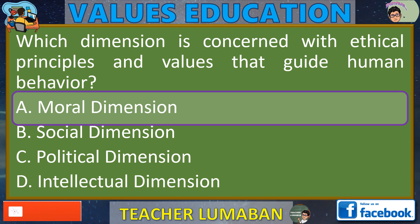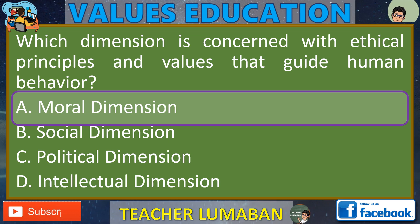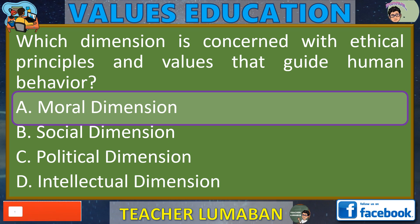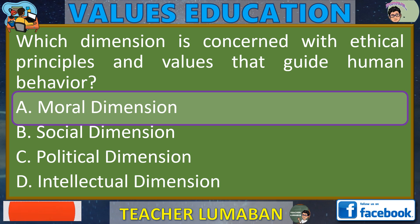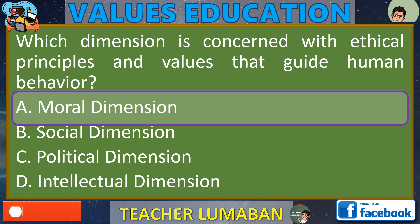The social dimension, on the other hand, refers to the aspect of human life that involves interactions, relationships, and structures within society. It includes social norms, roles, and institutions that shape human behavior and collective actions. Ang panlipunang dimensyon naman ay tumutukoy sa aspeto ng buhay ng tao na kinapapalooban ng interaksyon, relasyon, at estruktura sa loob ng lipunan. Kabilang dito ang mga panlipunang kaugalian, tungkulin, at institusyon na humuhubog sa pag-uugali ng tao at sama-samang pagkilos.